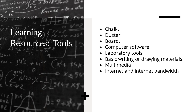You also look at multimedia, internet and internet bandwidth, and computers, because you might need them. There are different forms of laboratories that could be required to run a particular course of learning. These are some of the things you need to put in place.